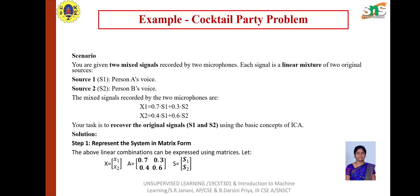There are two mixed signals which are a linear mixture of two original sources. Source 1 is Person A's voice and Source 2 is Person B's voice. The mixed signals recorded by two microphones are X1 = 0.7·S1 + 0.3·S2 and X2 = 0.4·S1 + 0.6·S2. Now we have to find the original signals S1 and S2.